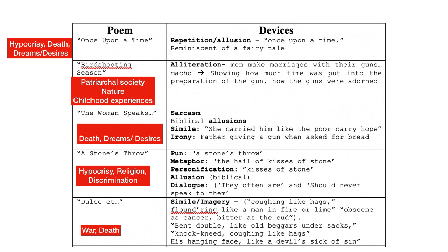So, 'Once Upon a Time' — we have hypocrisy, death, dreams, and desire coming out. The death we are talking about is not the death of a person, but the death of someone's sincerity or innocence. There's a part of this person dying. They used to laugh with their heart, but that's gone now. Repetition is used — 'Once upon a time' is repeated to show two things: the fairy tale quality, and how sincerely and desperately this man wanted to go back to how he used to be.